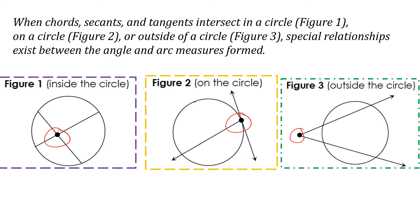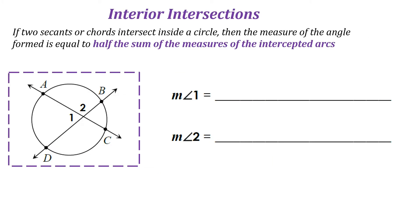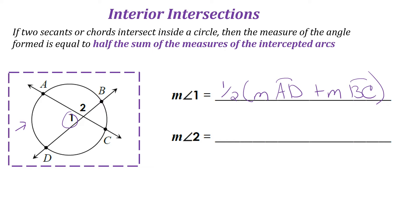We're going to start with intersections inside of the circle. If two secants intersect inside the circle, then the measure of the angle formed is equal to half the measure of the sum of the intercepted arcs. So the measure of angle 1 is equal to one-half times the measure of arc AD plus the measure of arc DC.